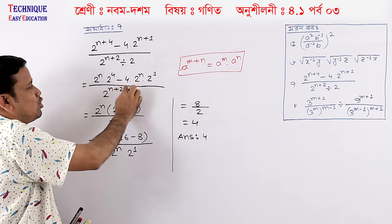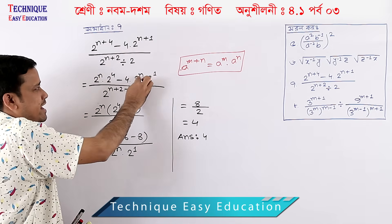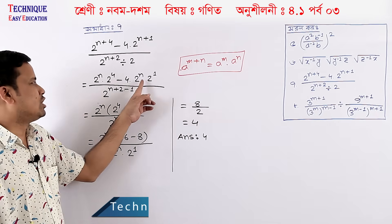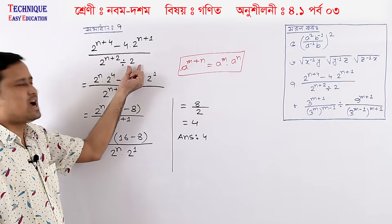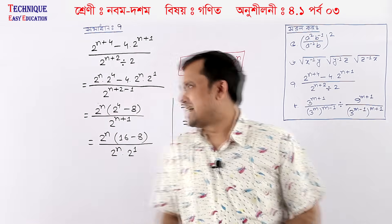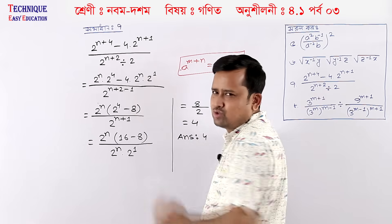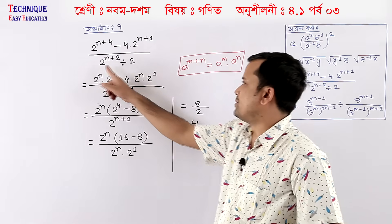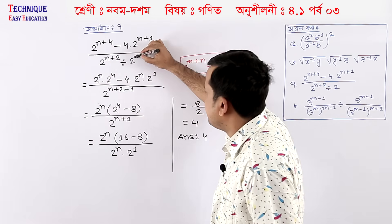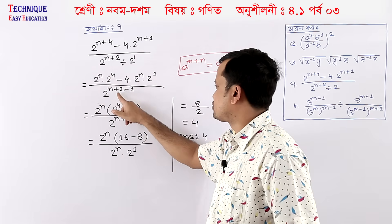2 to the power n plus 4. If I have n plus 4, I will go to the power n plus 4. 2 to the power n plus 1 is 2. If you have 2, then you will be 2. 2 is 2. How much power is 1? 1 is 1. Then you will be 2 to the power n plus 2.